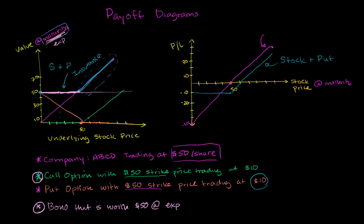So you have the value of the bond plus the call option. So at $60, the call option is worth $10, the bond's worth $50, the combination is worth $60. And so the combination of the call option plus the bond, you see it here on the left, it's actually going to have the same payoff diagram as the stock plus the put.